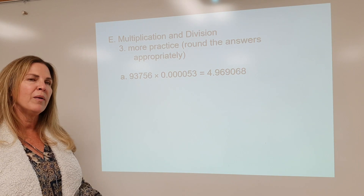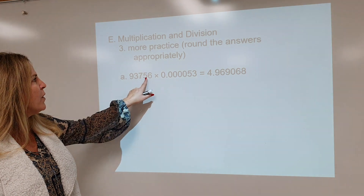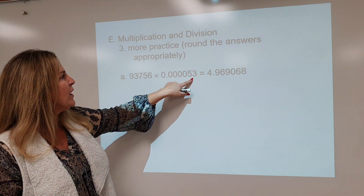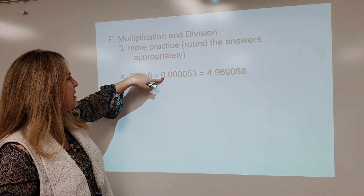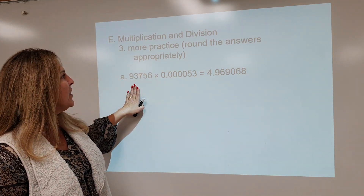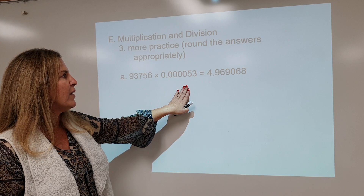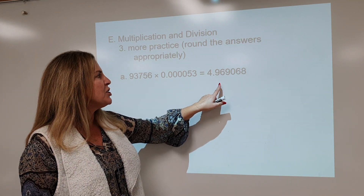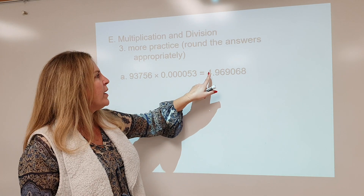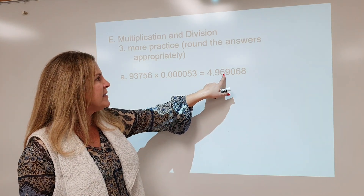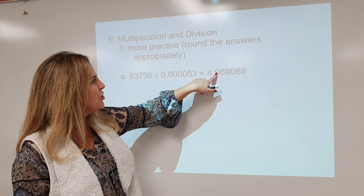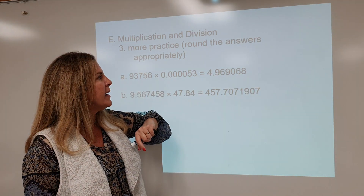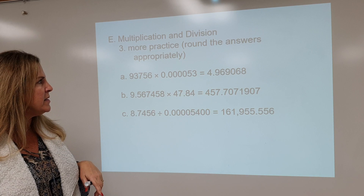Welcome back. Hopefully you said five significant figures in the first measurement, and two significant figures in the second because those are leading zeros. So five significant figures times two significant figures — how many sig figs should be in the answer? Two. We go one, two — that six is going to round that up to a 10, which means that becomes a five. Our final answer is 5.0.